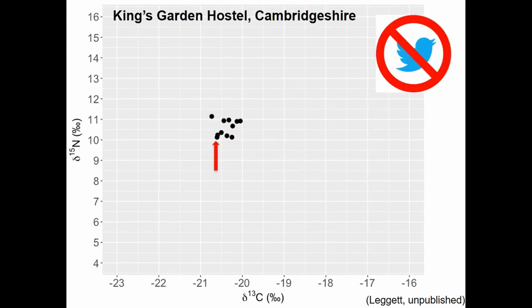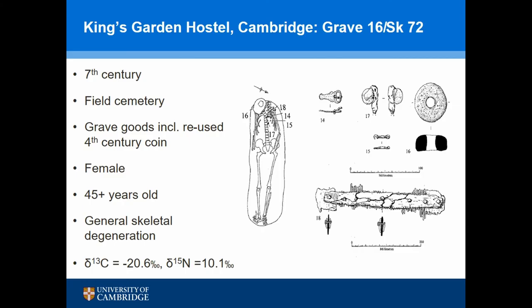One of my two case studies is Kingsgarden Hostel — I got this data about a month ago. Twelve individuals, seventh century. I've picked two women from two different sites of roughly the same age and contemporaneous, to show what two women in different parts of England were eating. One has reused grave goods including a fourth-century coin. She's female, roughly 45 years old, with general skeletal degradation, and her isotope signature tells me she's eating little or no fish — a very terrestrial diet, exactly what I'd expect for Cambridgeshire.